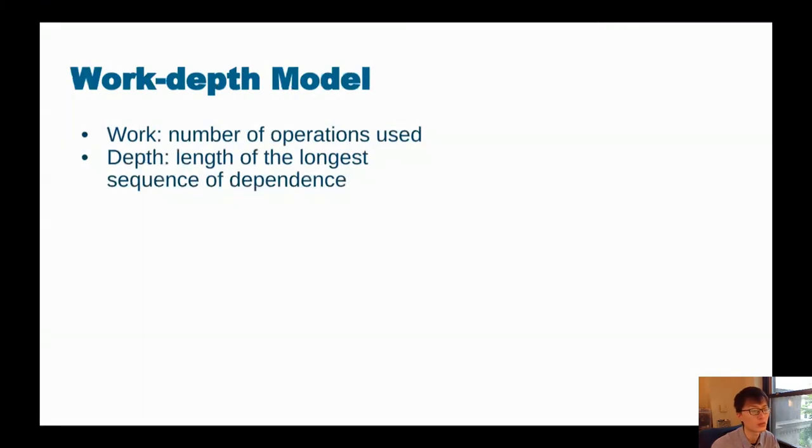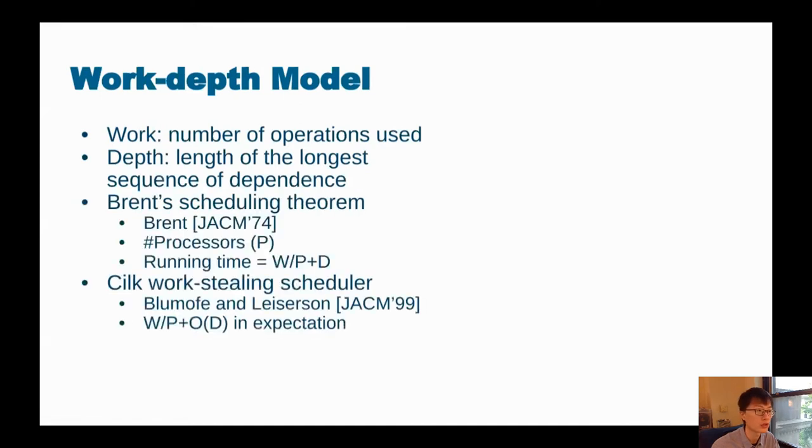Let me first introduce the theoretical model that we use. We use the work-depth model for parallel algorithms. Work is defined as the number of operations used in the parallel algorithm, and the depth refers to the length of the longest sequence of dependence in the parallel algorithm. Given work and depth, we use the Brent scheduling algorithm and use P processors to make sure the running time of the parallel algorithm is the work divided by the number of processors plus the depth. So the goal here is to minimize both the work and the depth. Usually when the depth is lower, that means there is a higher parallelism. In practice, we use the Cilk work-stealing scheduler to achieve a similar bound in expectation.